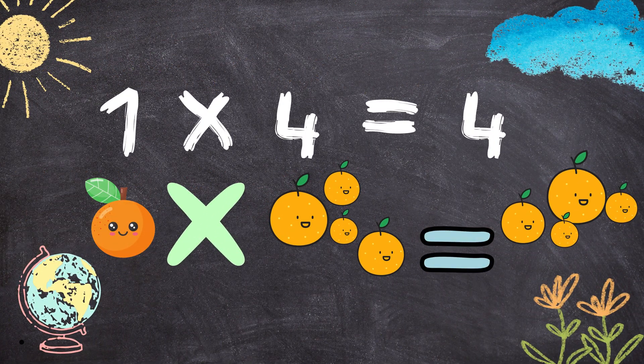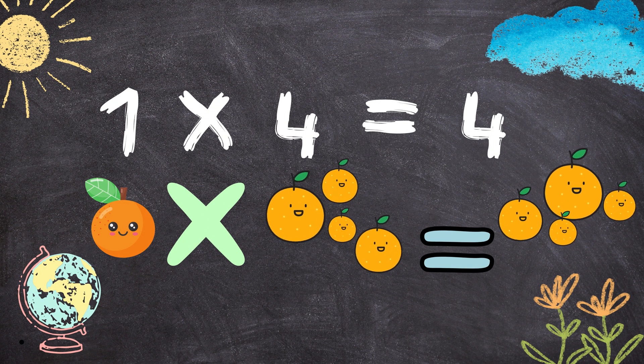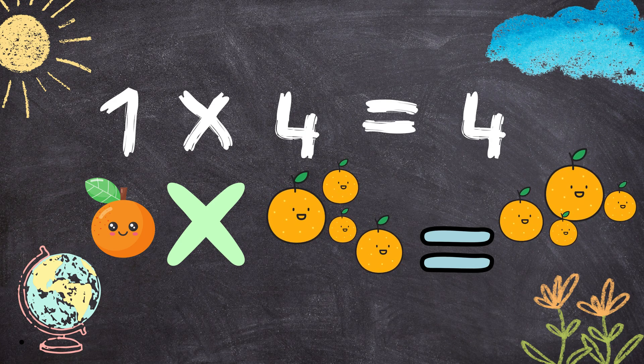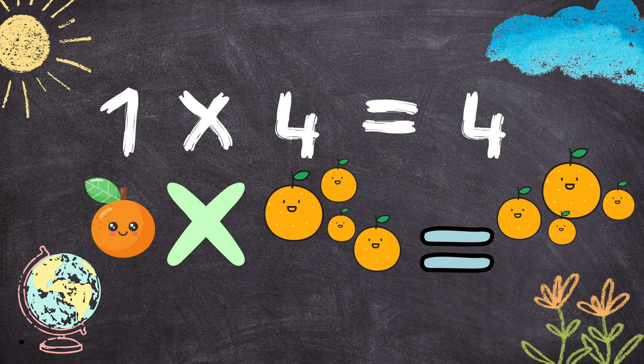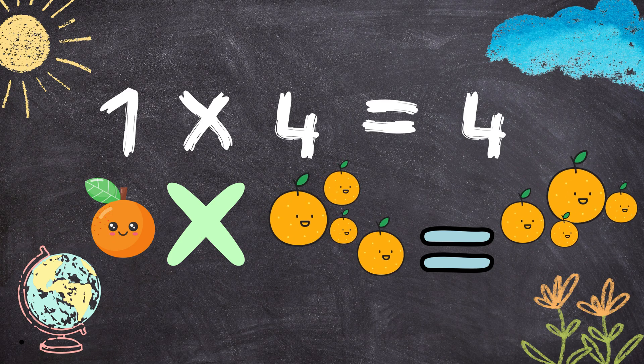1 times 4 equals 4. 1 orange multiplied by 4 oranges will give you 1, 2, 3, 4—4 oranges.